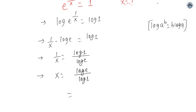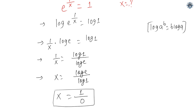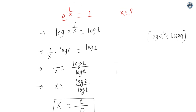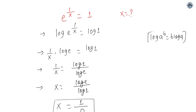We know that log e is equals to 1 and log 1 is equals to 0, so here we get an undefined solution for x. In this process we cannot solve for x, so we must think of an alternative way to solve this problem. If we can express 1 in terms of e or some other value other than 1, we can solve for x.